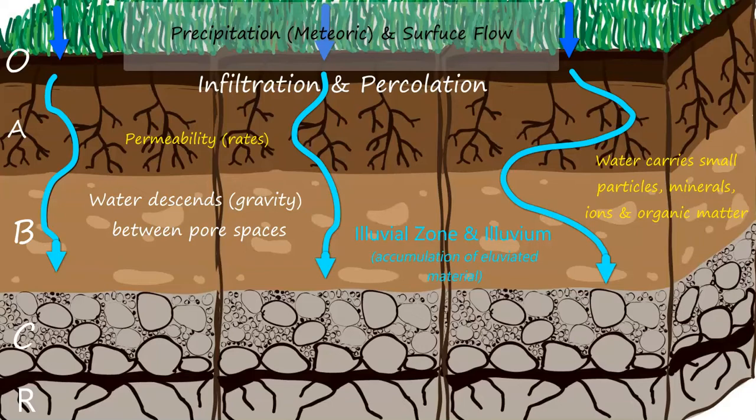So you'd say that a certain element or ion has been leached out of the soil. For example, potassium, calcium, sodium, magnesium, or iron that was in a layer of soil—in the A horizon, the topsoil towards the surface—